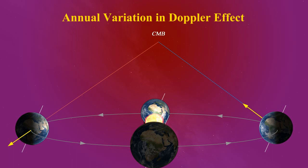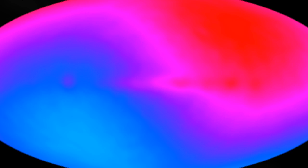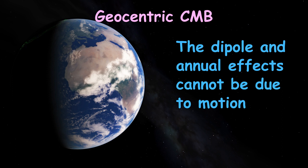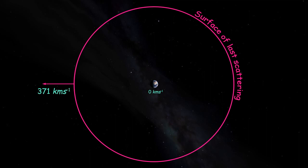How would the fixed earth clung to by geocentrists account for these observations? Without a moving observer, the radiation coming from all directions has no red or blue shift due to that motion. So there are a couple of possible explanations.